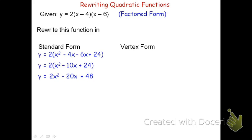Now that I know the standard form, I can find the vertex form. To do the vertex form, I'm going to group the pieces that have x. I'll say y equals the quantity 2x squared minus 20x, and then plus 48. Factoring out a 2 — since we do not have a 1x squared — leaves the quantity x squared minus 10x inside the parentheses, and then plus 48 outside.